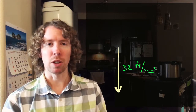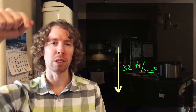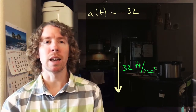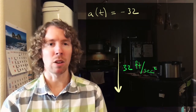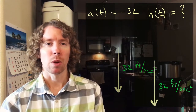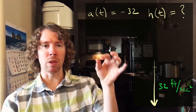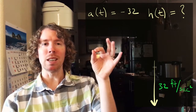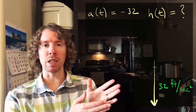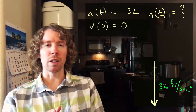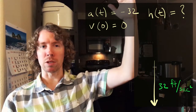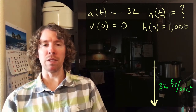We know what the acceleration is. It's negative 32, because it's pointing down — we'll have going up be the positive direction and going down be the negative direction. So a equals negative 32, and we want to find the height h of t. We also know that we're just dropping the marble, not throwing it down, so when t equals zero the velocity is zero: v(0) = 0. And the height when t equals zero is at the top of the building, so h(0) = 1000.